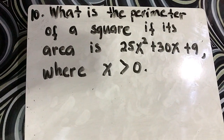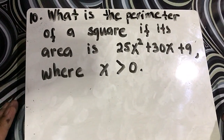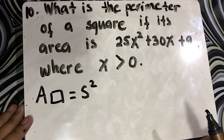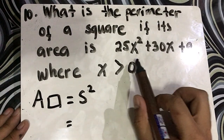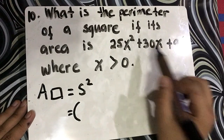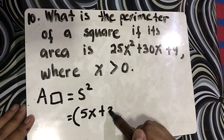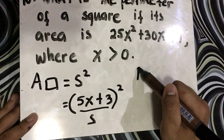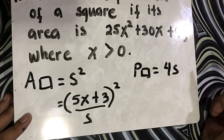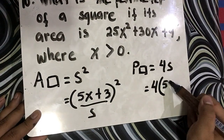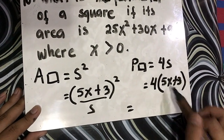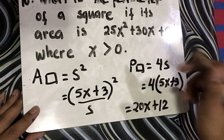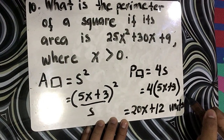What is the perimeter of a square if its area is 25x squared plus 30x plus 9, where x is greater than 0? The area is a perfect square trinomial, so we can get the side length s. That is 5x plus 3, the square of a binomial, so s equals 5x plus 3. To get the perimeter of a square: P equals 4s. So we multiply 4 times 5x plus 3. Distributing: 4 times 5x is 20x, plus 4 times 3 is 12. Final answer: 20x plus 12.